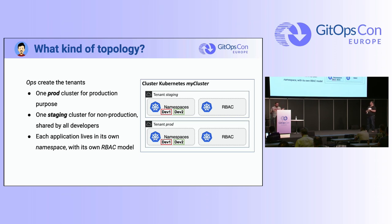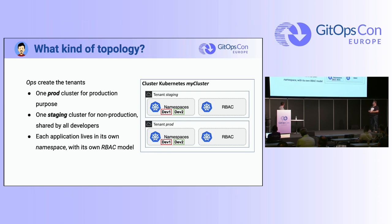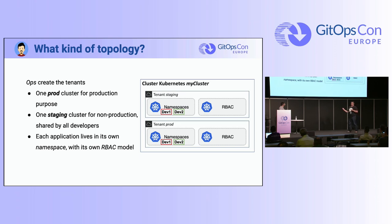In this context, we create one namespace per application, because we have one cluster for production and one for non-production. We don't want to manage hundreds of clusters and one cluster per application — it's too expensive. So we have one production cluster, one staging cluster, and every application lives in its own namespace with its own RBAC model. Every application is isolated from the others — dev1 team must not deploy to the dev2 namespace and vice versa.